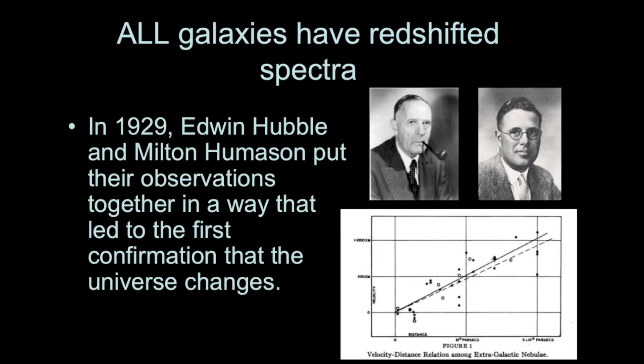Hubble looked at dozens of galaxies, and he put together his observations, the observations of people like Vesto Slipher, and by 1929 had established that there is a linear correlation between distance and apparent recessional velocity of galaxies outside of our local group of galaxies. This was the first time that we had observational confirmation that the large-scale structure of the universe changes with time.